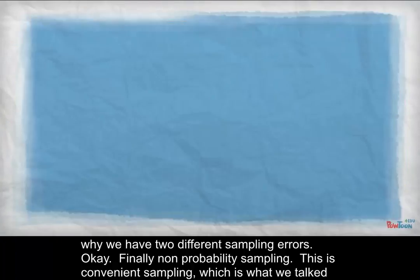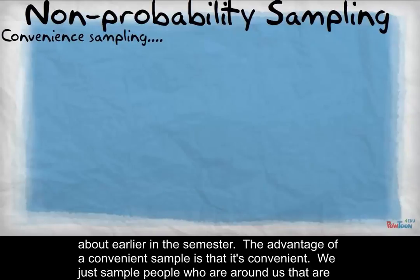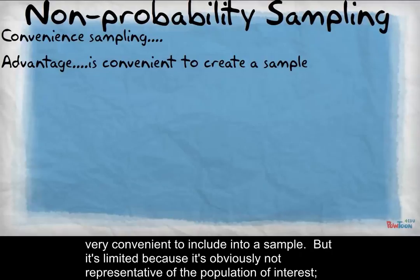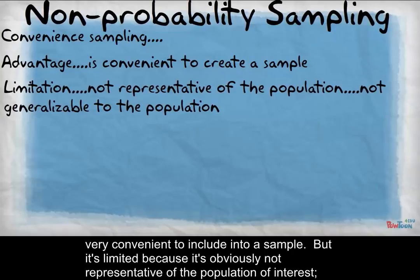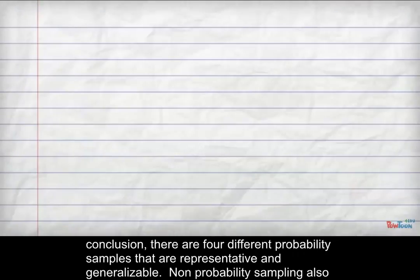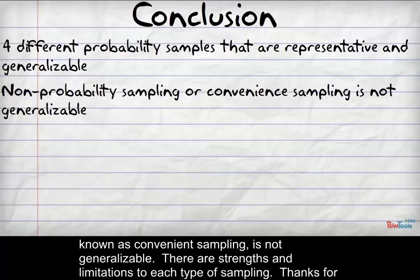Finally, non-probability sampling — also known as convenience sampling. The advantage of a convenience sample is that it's convenient; we simply sample people who are around us and easy to include. But it's limited because it's not representative of the population of interest, so the statistics from a convenience sample cannot be generalized to the entire population. In conclusion, there are four different probability samples that are representative and generalizable. Non-probability sampling, also known as convenience sampling, is not generalizable.